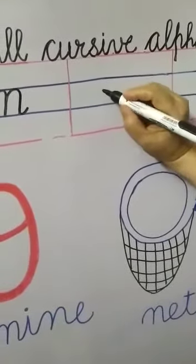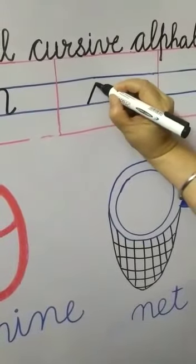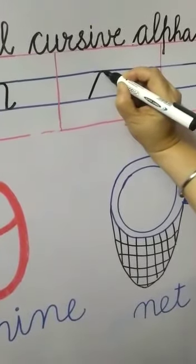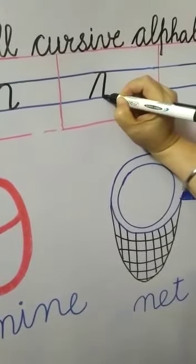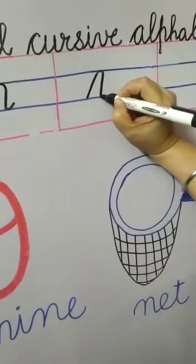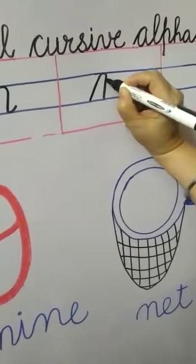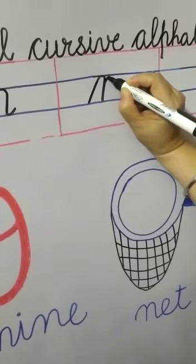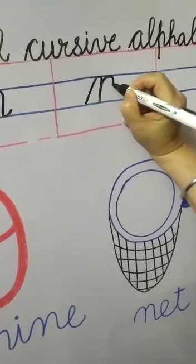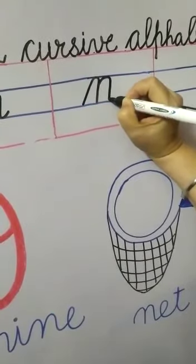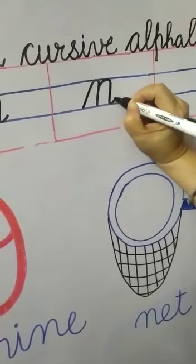Once again — start from the lower blue line, go slantingly up to the upper blue line. Touch here, make a small round, come little bit slantingly down up to the lower blue line. Again go upwards on our same line. After reaching near the upper blue line, make a slanting line. Touch here, make a round again, come downwards up to the lower blue line. Touch here, make a small round and come little bit up.